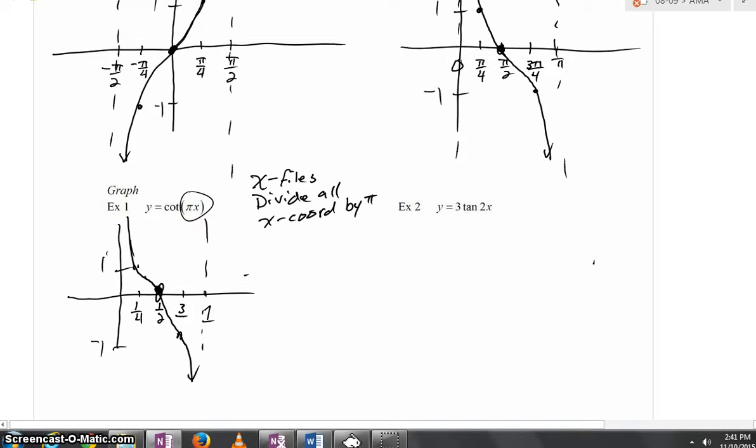And, you know, you want to show those values where you are achieving 1 and negative 1. In a similar way, you could talk about your period now is pi over b, absolute value of b. You're dividing pi by pi. Your period would be 1, in case you were ever asked that.